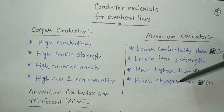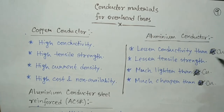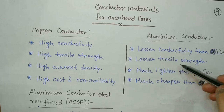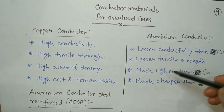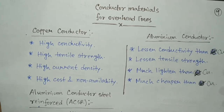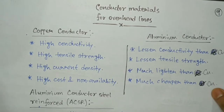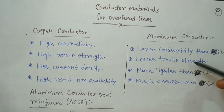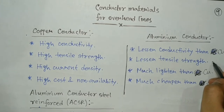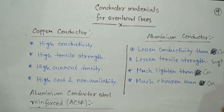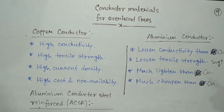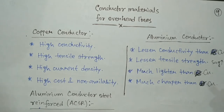Nowadays people prefer aluminium conductors in long transmission due to their cheapness and lightweight. Unfortunately, aluminium conductor has lesser conductivity than copper and also lesser tensile strength. But it is much lighter and much cheaper than copper. However, the lesser tensile strength of aluminium results in high sag, which is a significant problem.